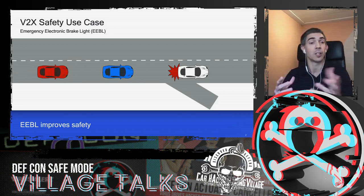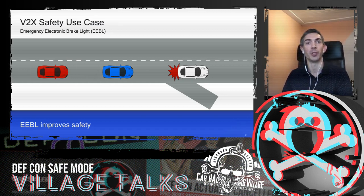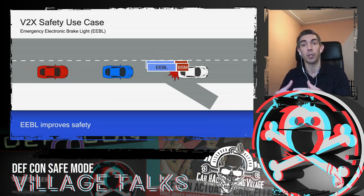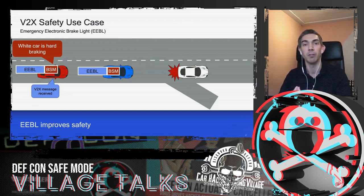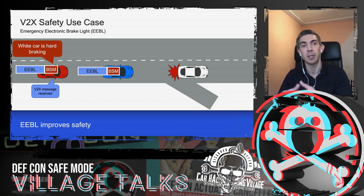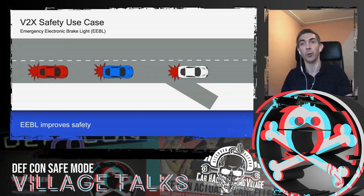In this example, we have three cars all equipped with V2X technology. The white car is performing an emergency brake. Because the onboard unit is connected to the CAN bus, it can detect high deceleration and brake pressure, and generate a message sent to surrounding vehicles. When other vehicles receive a BSM — a Basic Safety Message — they understand the white car is braking and can brake themselves, avoiding a chain collision.